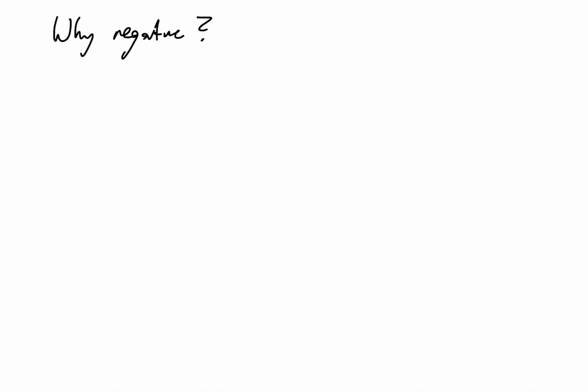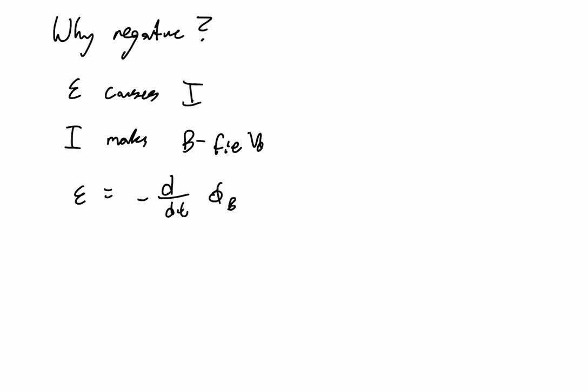Why is there a negative sign? The direction of our induced EMF is going to cause a current, and that current is going to make its own magnetic field, which opposes the change — just as we found with E equals negative d/dt of phi_b, Lenz's law. By our right-hand rule, this is a reactionary force that opposes a change. That is why we have a negative sign — it's very similar to the negative sign in our spring constant equation F equals negative kx, where we have an oppositional force opposing a change.